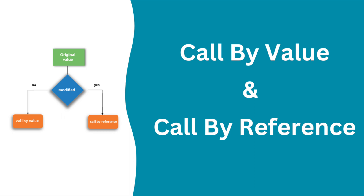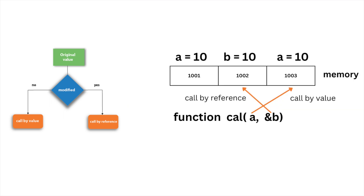Hello everyone and welcome back to my channel. Today I am going to show you call by value and call by reference. Let's see these two concepts by examples. The basic difference is that in call by value, you cannot modify the value of the actual parameter that you have sent in the function, but in call by reference, your actual value will be changed.